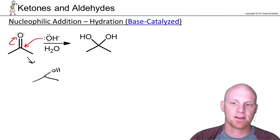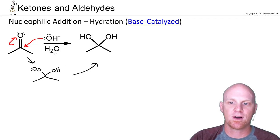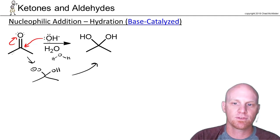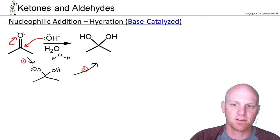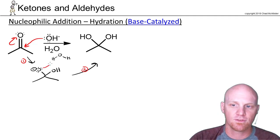So now the OH will be attached, and the other oxygen here is now going to have a negative formal charge. We form an alkoxide intermediate here. And then I'm going to draw out one of these water molecules because that's where we're going to protonate in step two. Step one here is our nucleophilic attack. Step two here is simply going to be protonation. I'll draw the lone pairs in since we're about to use one of them for protonation.